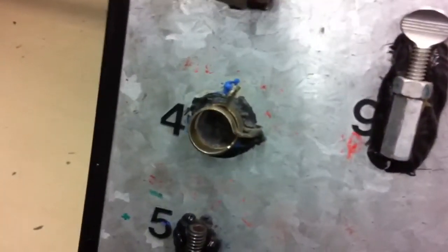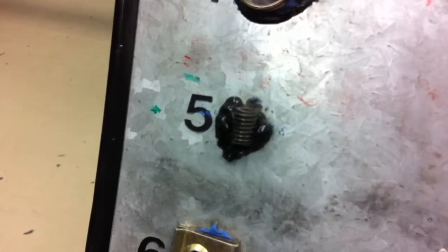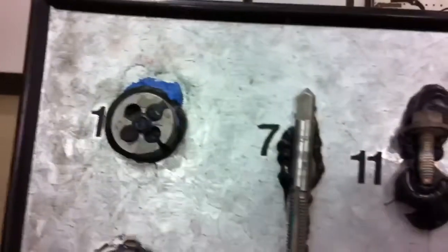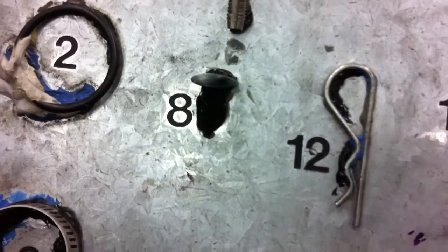Number four is a plier clamp. Number five is a set screw. Number six is a J-nut. Number seven is a tap. Number eight is a push-in body clip.